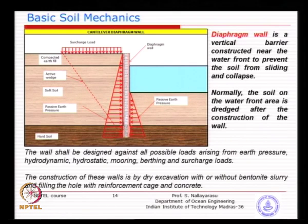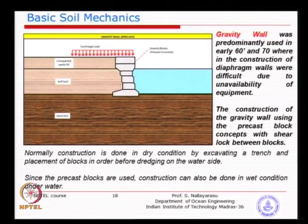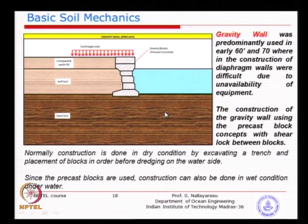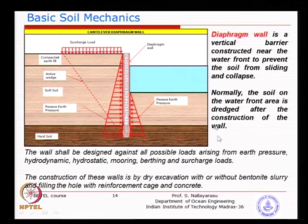Many older ports constructed during the British period used gravity walls - simply aligning and keeping big concrete blocks or rocks so they are stable. But this is feasible only when you have very good ground below the dredge level, otherwise it will keep sinking. The retaining wall needs to sustain loading from port and harbor activities. We need sufficient strength in the wall as a structural element, and sufficient strength in the soil to take the horizontal load because the surcharge from port activity, cranes, and material stacking will be very large.